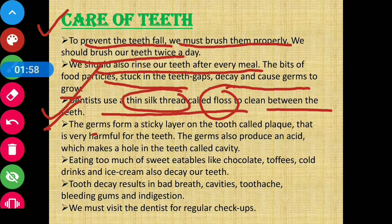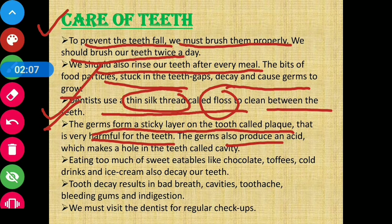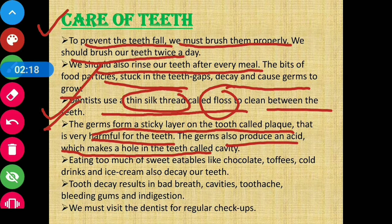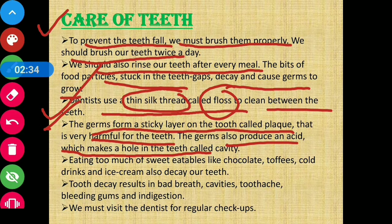The germs form a sticky layer on the tooth called plaque, which is very harmful for our teeth. The germs also produce an acid which makes a hole in the teeth called a cavity. Jo germs hote hain, unki wajah se hamare daaton ke oopar ek sticky layer form hoti hai jise plaque kaha jaata hai. Woh bahut zyada harmful hai, aur germs ek acid produce karte hain jiski wajah se daanton mein hole ho sakta hai — jise cavity kaha jaata hai.